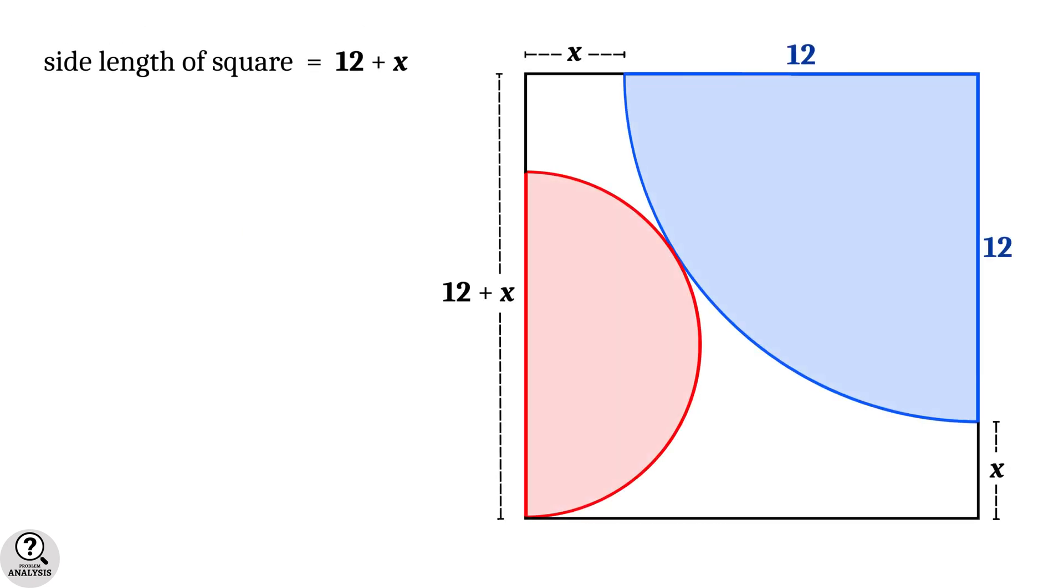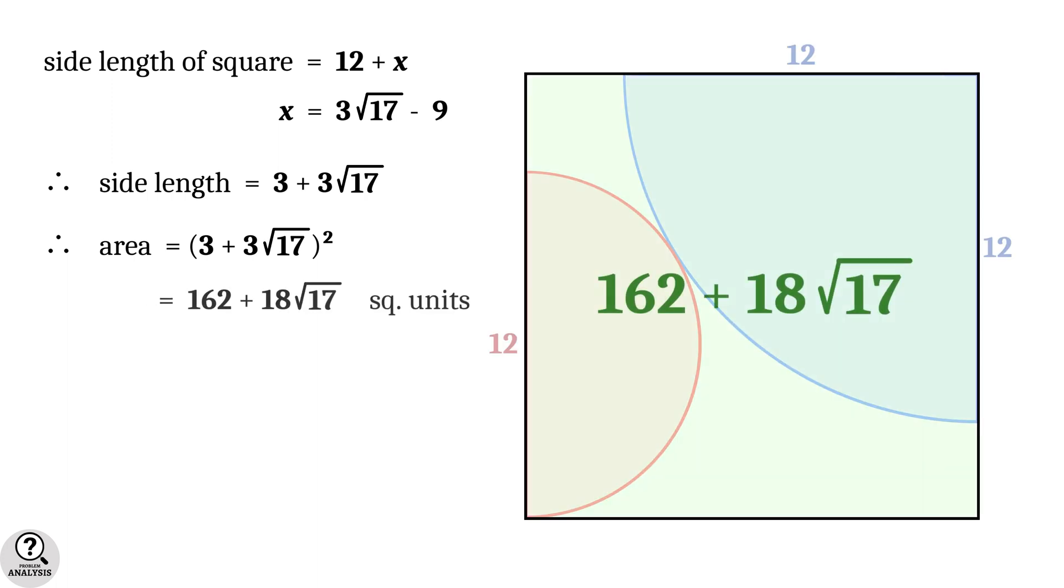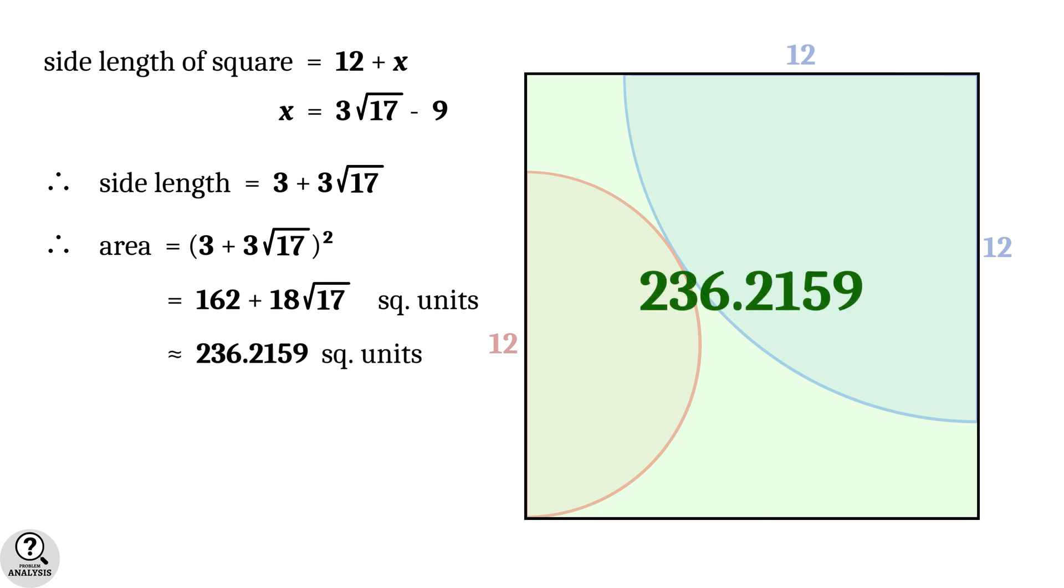Now come back to our figure. The side length of the square is 12 + x, and x = 3√17 - 9. Therefore, the side length is 3 + 3√17 units. Hence, the area of the square is (3 + 3√17)², which equals 162 + 18√17 square units. This is approximately 236.2159 square units, and that is the solution we are looking for.